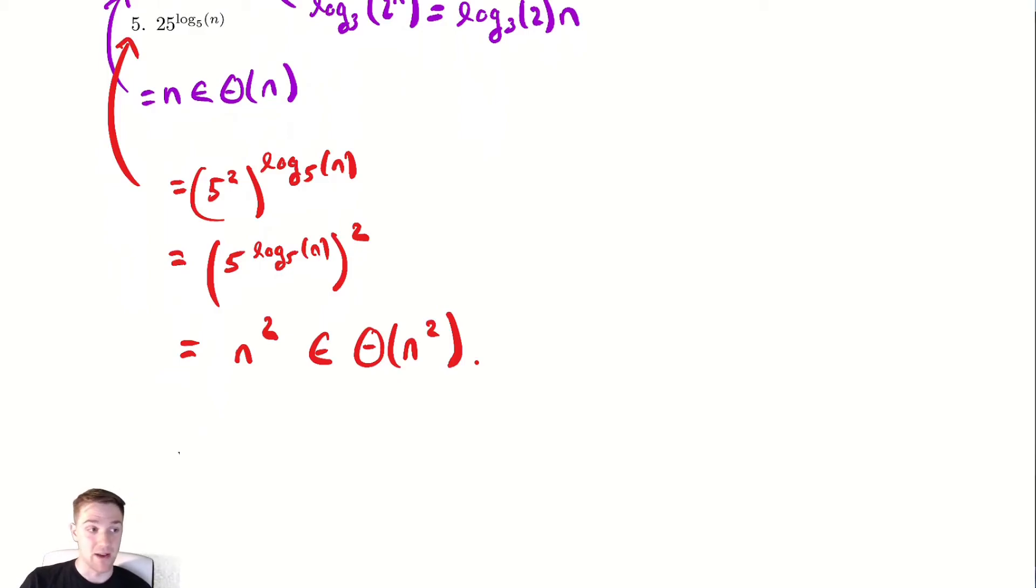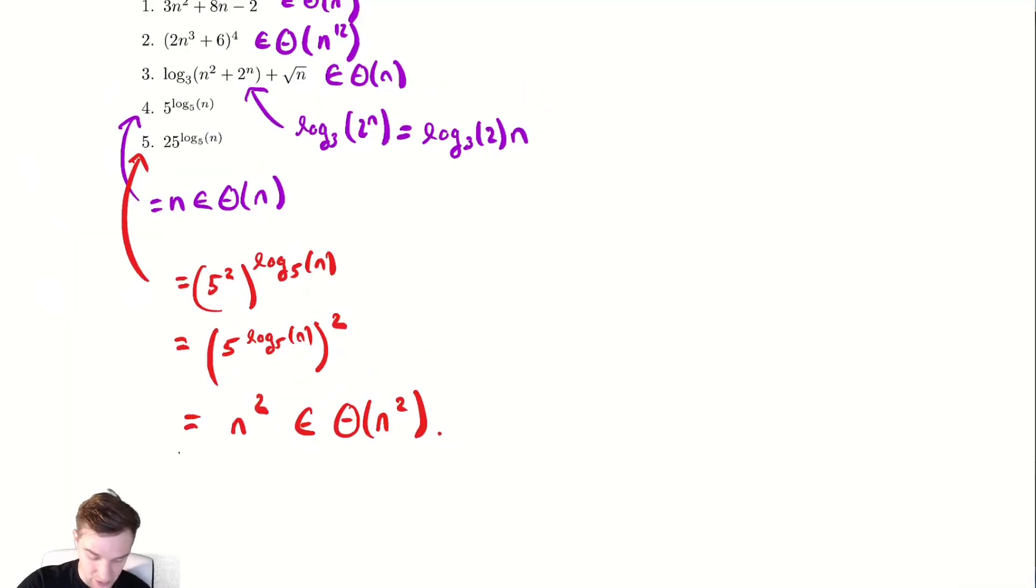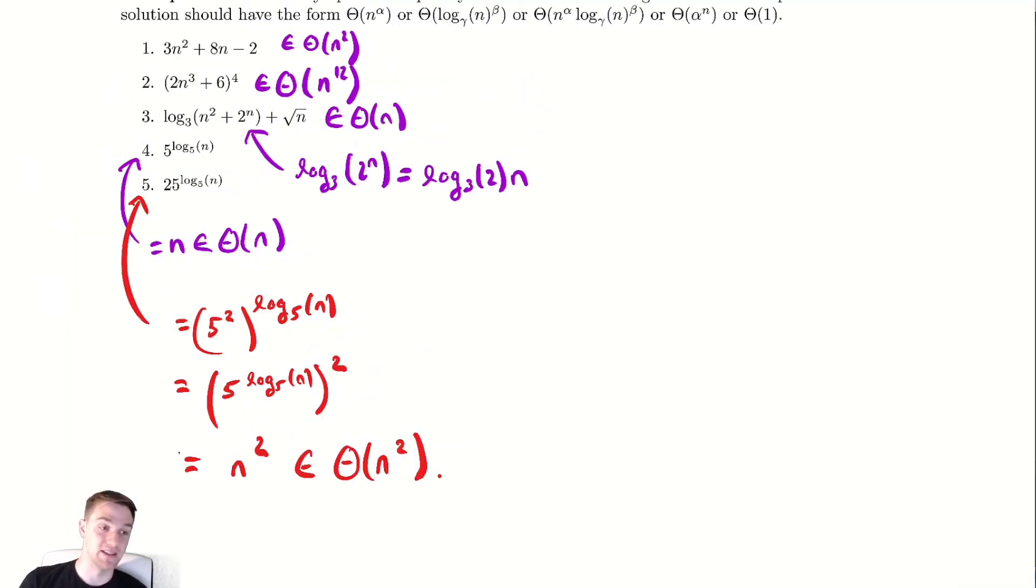And now we have all five of these examples in the desired form and we've expressed the complexity in sufficient ways. For any problem of this where I'm just asking to determine the complexity, you can always ignore the lower order terms and we're just looking for the higher order terms. You don't need to show any work or provide any justification. I will even tell you that in the problem's directive.